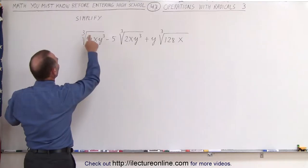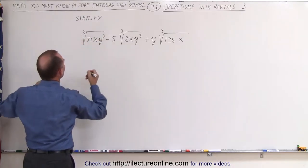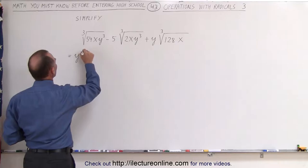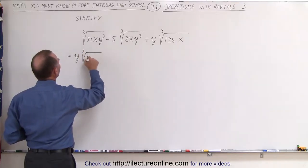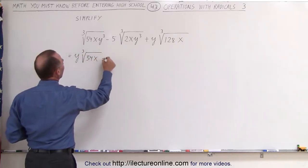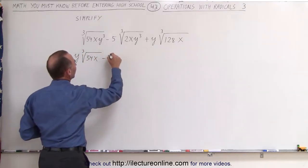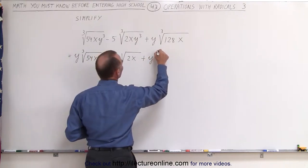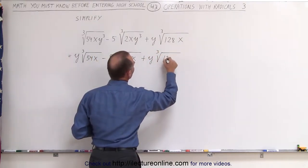The cube root of y cube is simply y, so this can be written as y times the cube root of 54x minus, here we can take the y out as well, we have the cube root of 2x, and here we have plus y times the cube root of 128x.